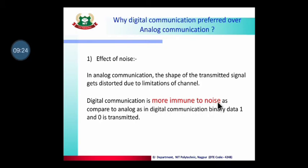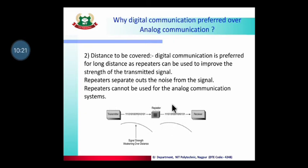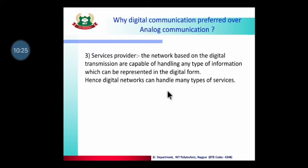More immune to noise means the system can resist noise better. In digital communication, when we receive the signal we can identify whether it is a one or zero based on the threshold level. Even between transmitter and receiver, if the signal strength drops, we can use a repeater. The repeater does not add noise to the signal; it regenerates and increases the signal strength toward the destination. This is why we can use repeaters in digital communication, which we cannot effectively use in analog communication.